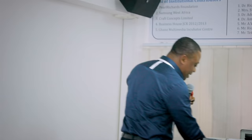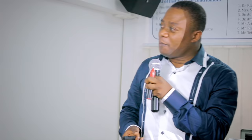Looking at the data: there are five people in each group — though groups don't always have to be balanced. Just from inspection, does it appear that the new drug is doing magic? Remember, this is the count of episodes of shortness of breath, so you want the number to come down.